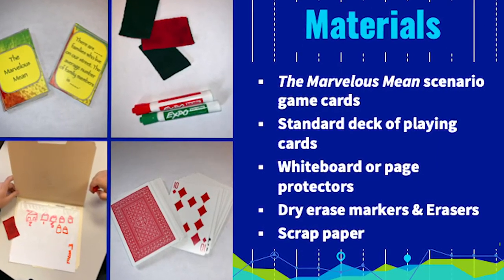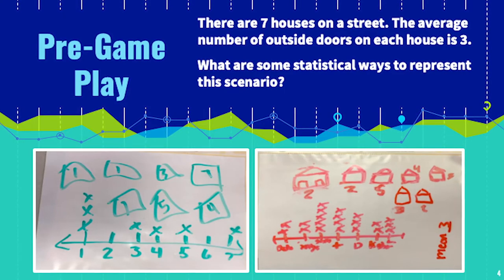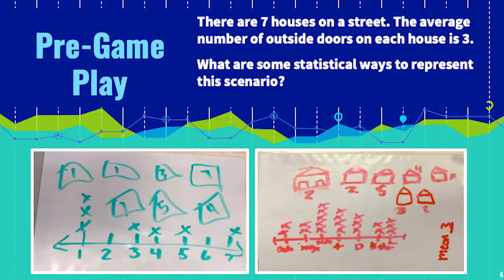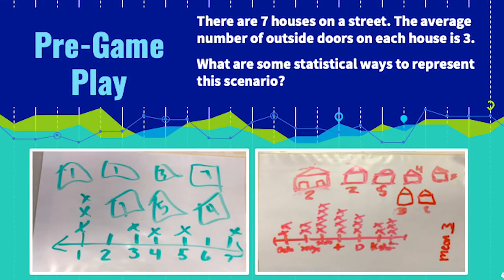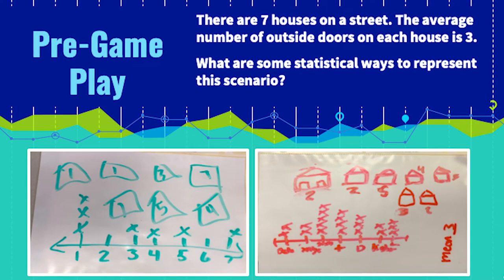Here are the materials necessary for this game. Before playing, think about the following scenario: Suppose there are seven houses on a street. The average number of outside doors on each house is three. What are some statistical ways to visually represent this scenario?